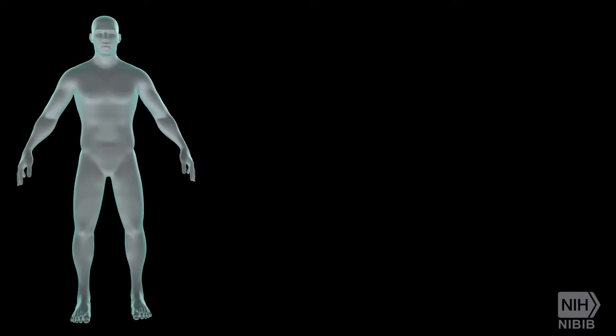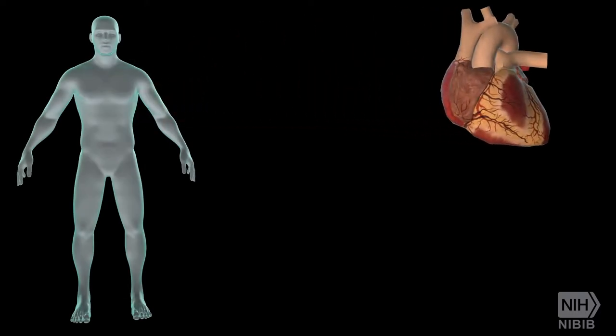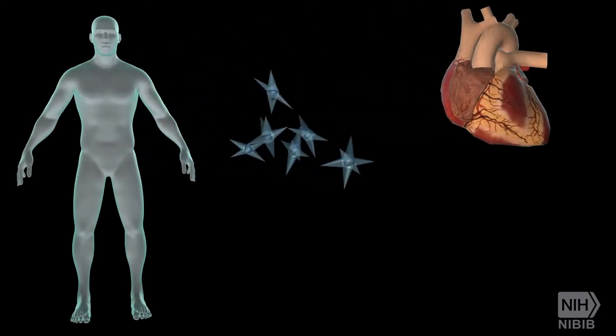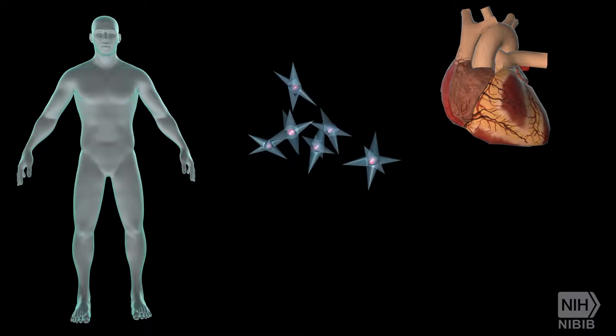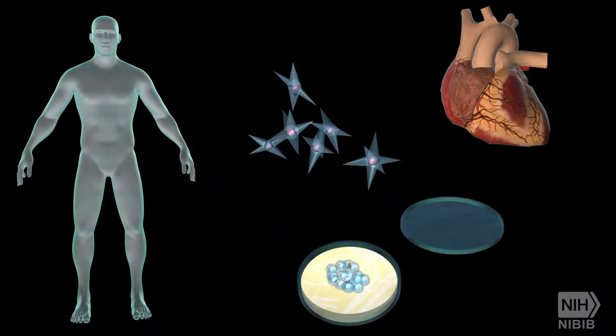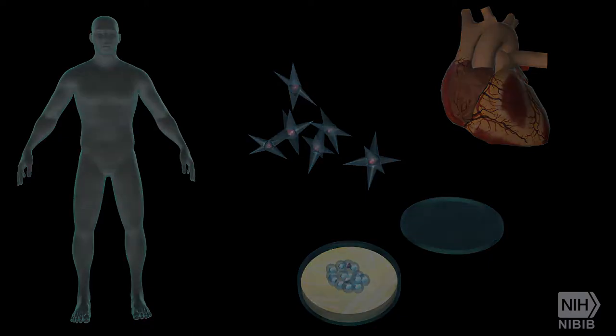The cells can be directly harvested from the target organ, developed from precursor or stem cells, or taken from lines grown in the lab — all ideally from the patient, as that limits problems with rejection.